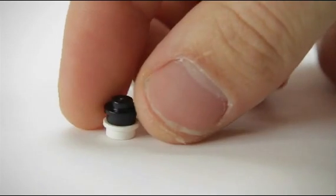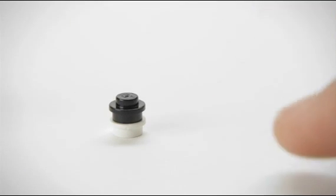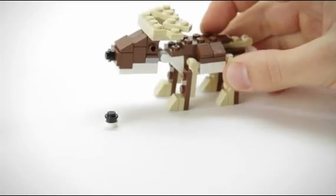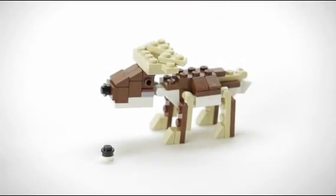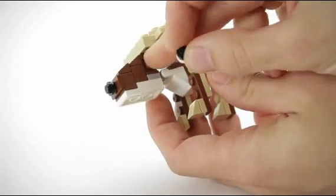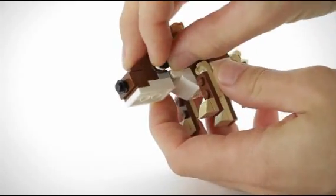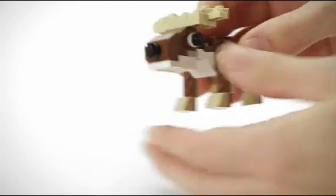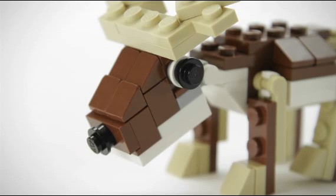Next, we'll take this larger eye that we built using the two 1x1 round plates and we'll put it on this reindeer. So, we just take the reindeer and take the eye and you put it here sideways onto this earling brick like that. There. Doesn't he look much cuter now?